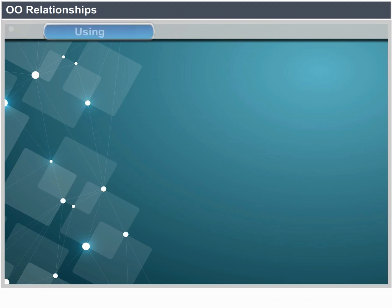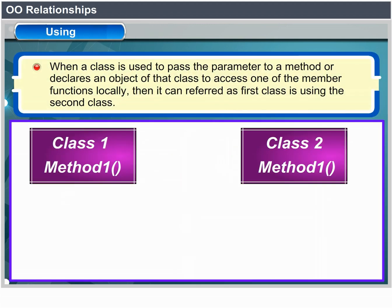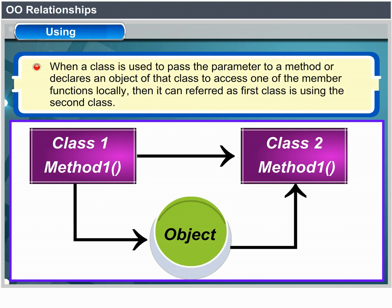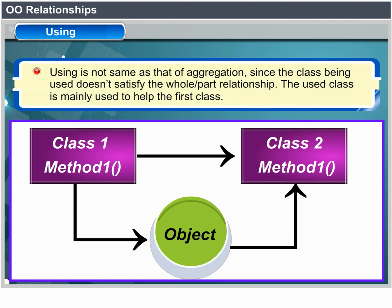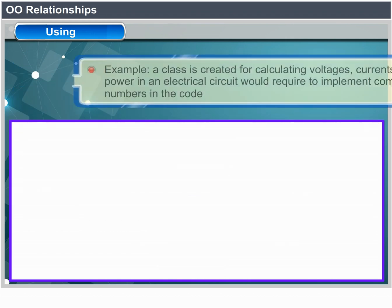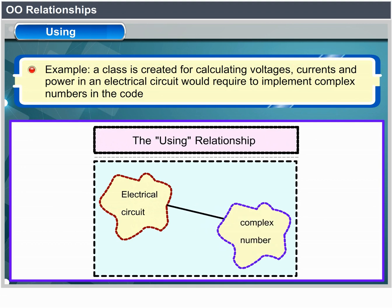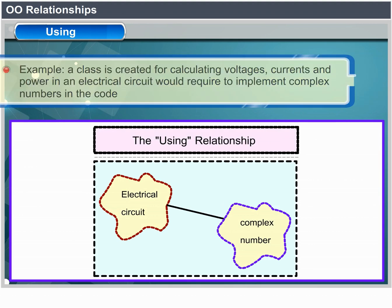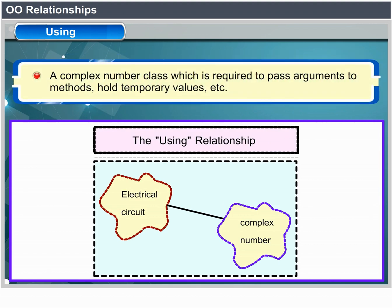The 'using' relationship occurs when a class definition uses another class as a parameter to a method or declares an object of that class local to one of its member functions. Using is not the same as aggregation, since the class being used doesn't satisfy the whole-part relationship. For example, a class for calculating voltages, currents, and power in an electrical circuit would use a complex number class to pass arguments to methods and hold temporary values.